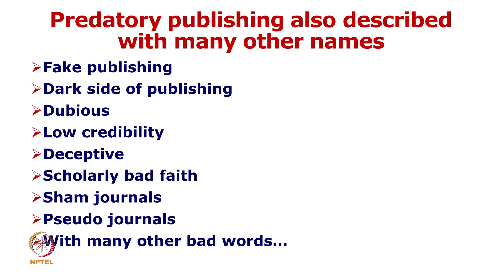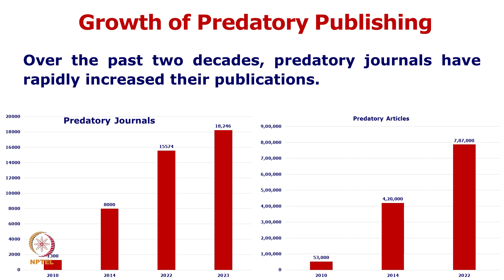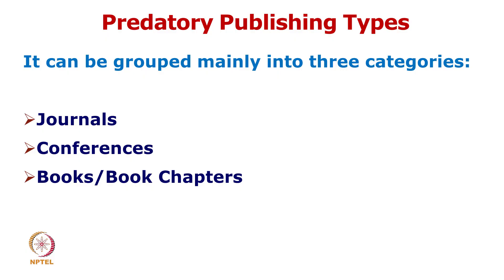Predatory publishing is also described by many other names such as fake publishing, dark side of publishing, dubious publishing, low credibility publishing, deceptive publishing, scholarly bad faith, sham journals, and pseudo journals. Over the past two decades, predatory journals have rapidly increased their publication numbers, and data shows they are still increasing day by day despite plagiarism detecting tools being available. Predatory publishing can be categorized mainly into three types: journals, conferences, and books or book chapters, though the focus here will be on journals.